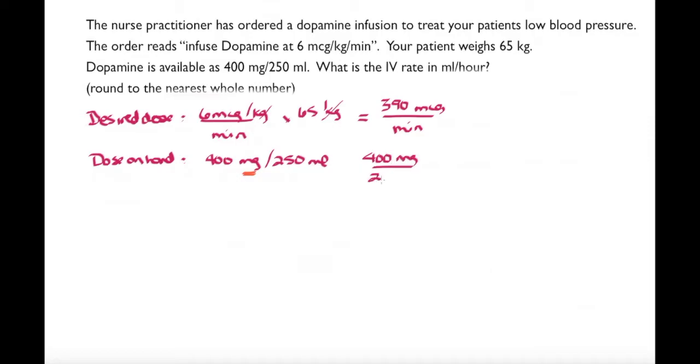Now this milligrams doesn't match with my micrograms, so I need to do a conversion to put my dosage into micrograms. I know that in one milligram I have 1,000 micrograms, and so that gives me a total of 400,000 micrograms in my 250 mil bag, and now my units match.